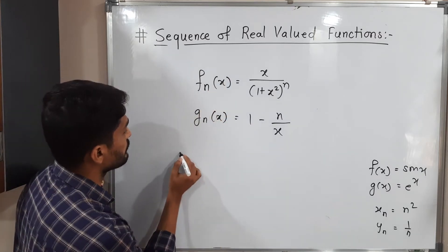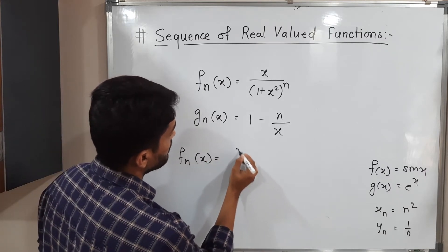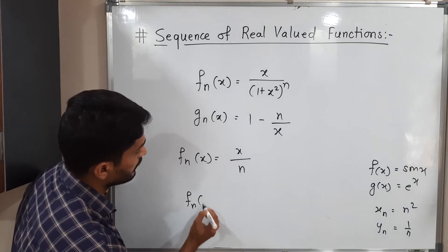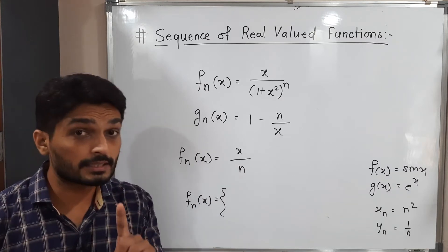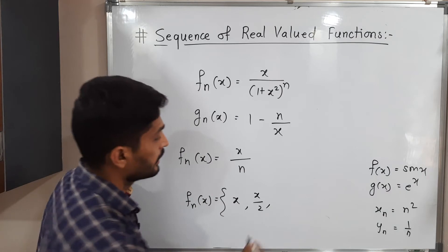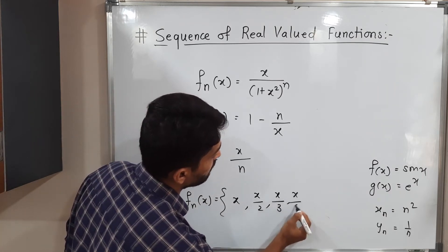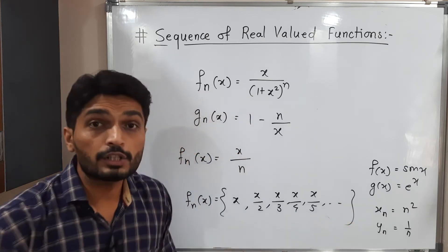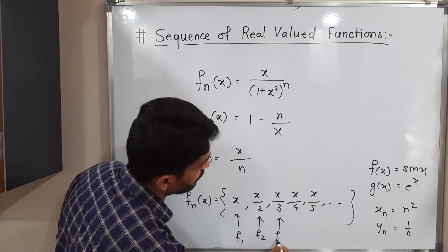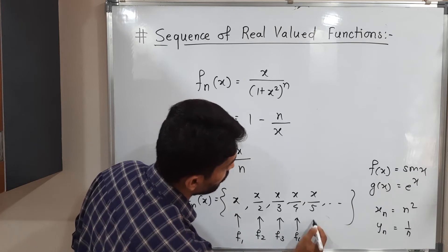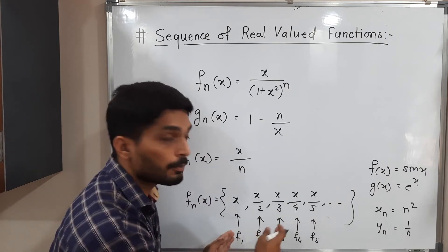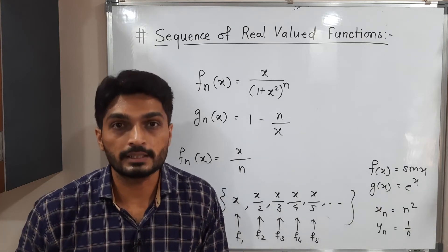Let us work on one sequence of functions: fn(x) = x upon n. If I put n = 1, we get x. If n = 2, we get x by 2. If n = 3, we get x by 3, then x by 4, then x by 5, and so on. So we get several functions: this is f1, this is f2, this is f3, f4, f5, and so on. We have a sequence — a proper sequence of several functions.